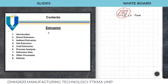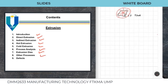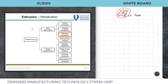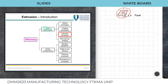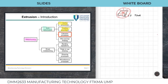Today's lecture will cover: introduction, direct and indirect extrusion, hot and cold extrusion, formulas for process analysis, die types used in extrusion, other related extrusion processes, and defects in extrusion. We are currently in the metal forming section covering bulk deformation - we have already covered rolling and forging, now we are doing extrusion, and next will be wire and bar drawing.